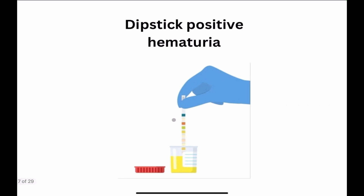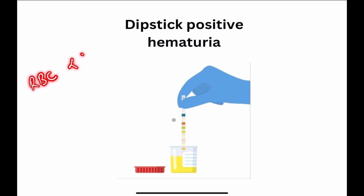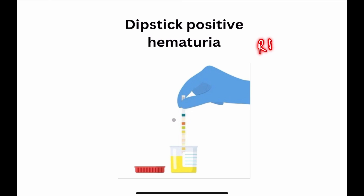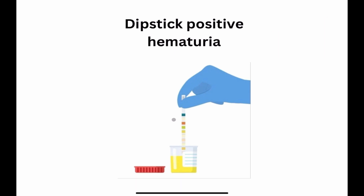There is something known as dipstick positive hematuria. This is when the urine looks red or dark brown, but under the microscope the RBCs are less than five per high power field, yet the dipstick shows RBCs are present. This phenomenon occurs because the dipstick reacts to pigments like hemoglobin and myoglobin — this happens when there is breakdown of blood cells or breakdown of muscle known as rhabdomyolysis. These pigments react with the enzyme in the dipstick and give a positive reaction, but it's not actually blood in the urine.